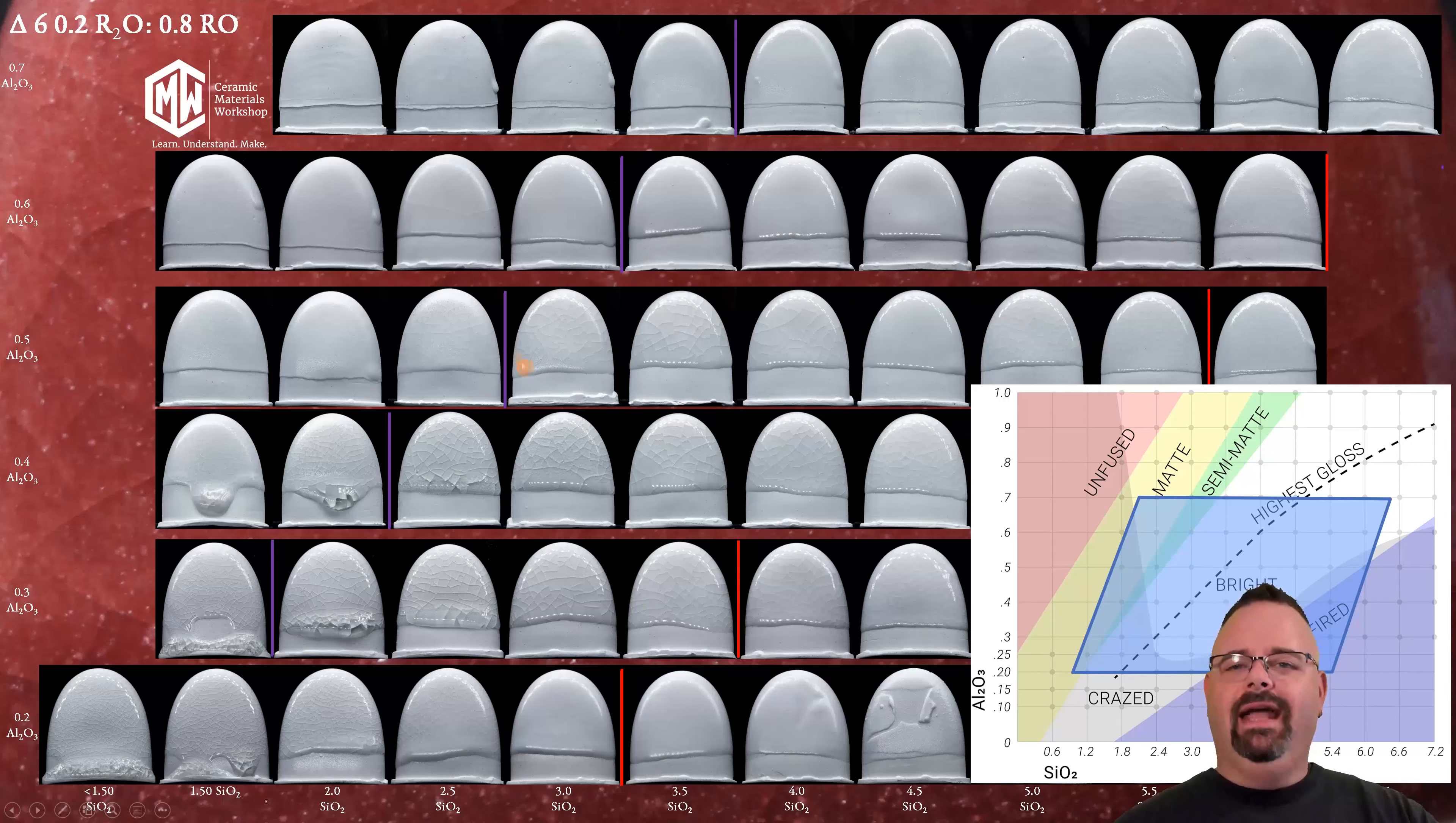The purple line delineates the separation between the glossy section and the matte section. Well amazingly enough if you look at the glazes on the left side of the purple line they are matte. And if you look at the glazes on the right side of the map they are glossy just as the map predicts.